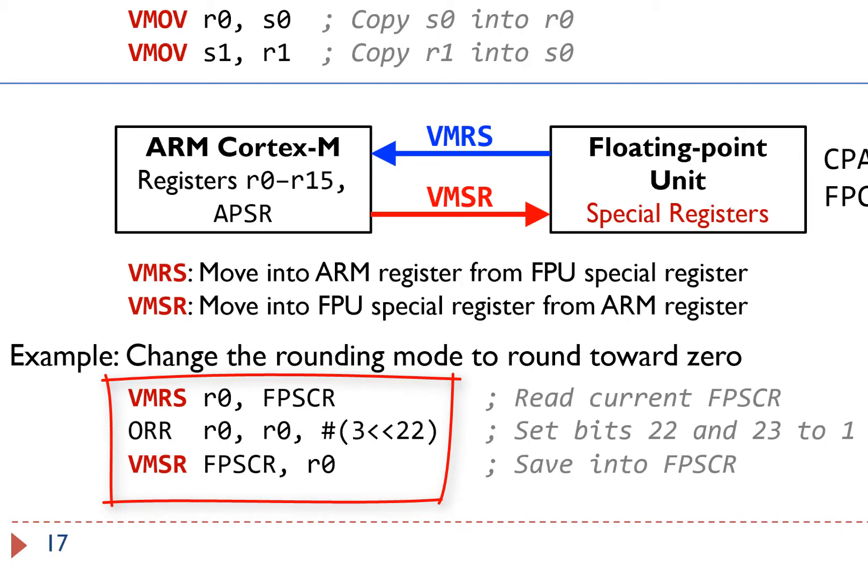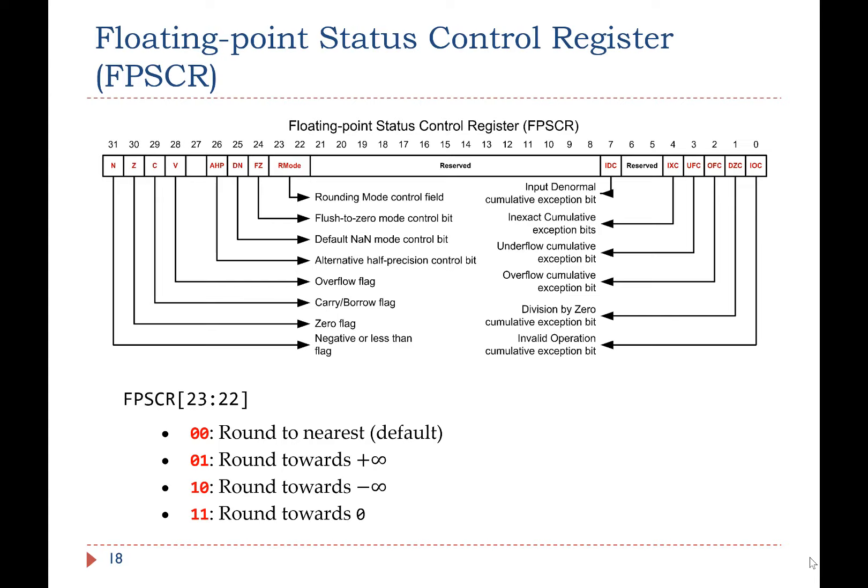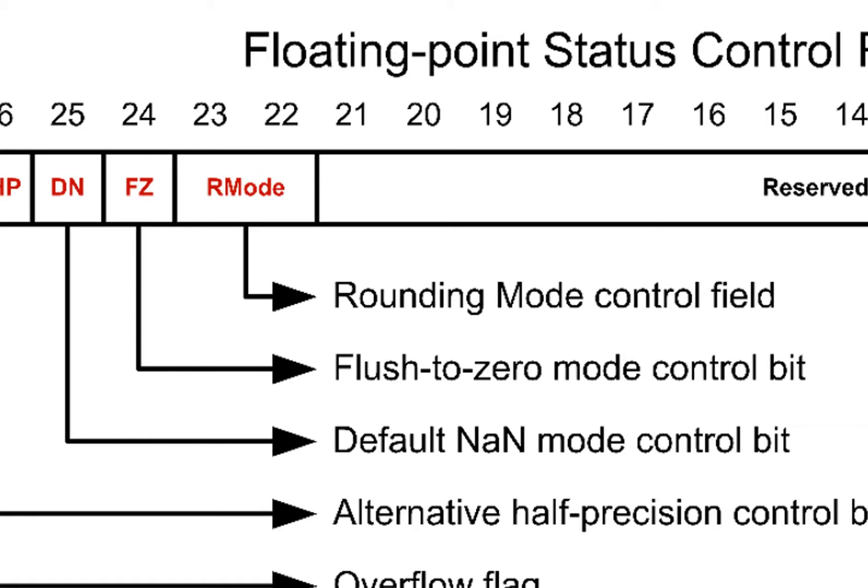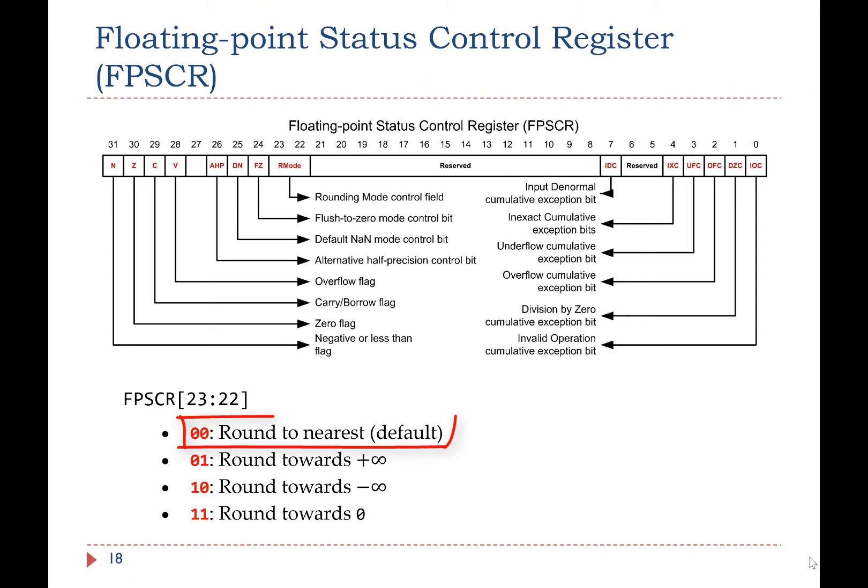Just for your reference, FPSCR stands for Floating Point Status Control Register. Bits 22 and 23 define the rounding mode. The default is to round to the nearest. When these two bits are 1, FPU rounds the result towards 0.